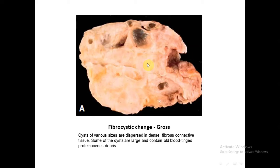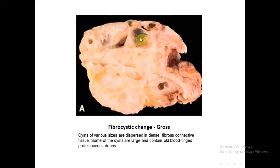This is a gross picture for fibrocystic change. We see here multiple cystic structures filled with proteinaceous materials. These are the cysts and here we have the whitish-gray stroma. That is why it is called fibrocystic change.